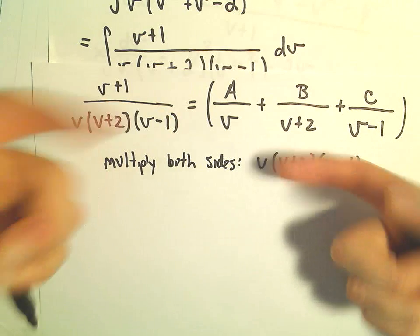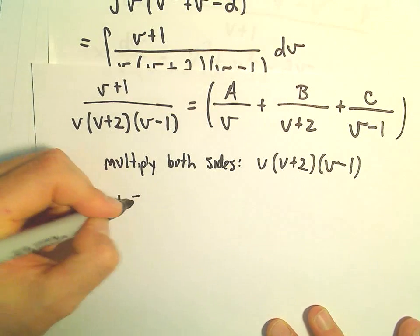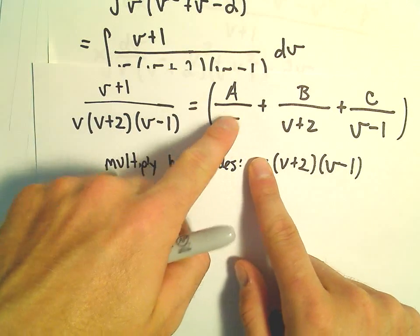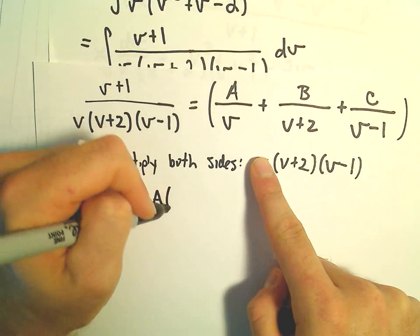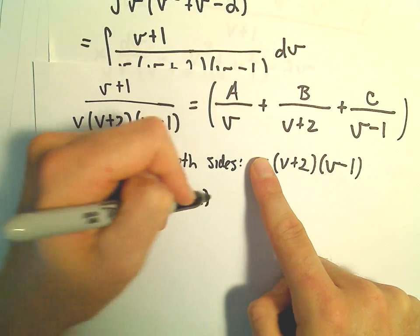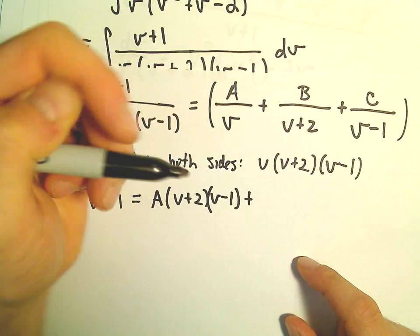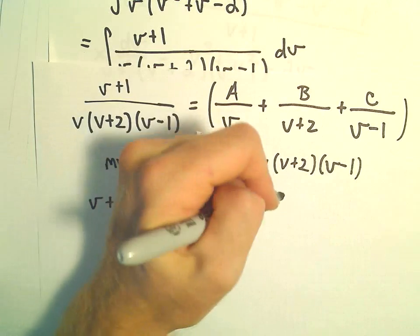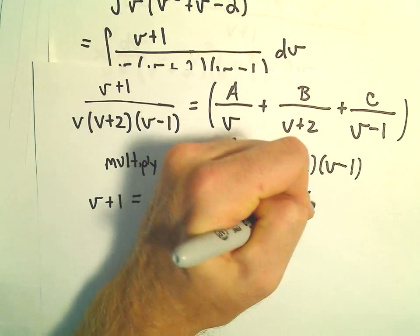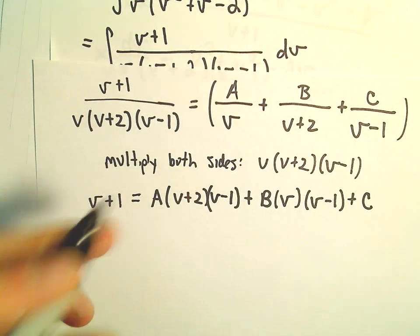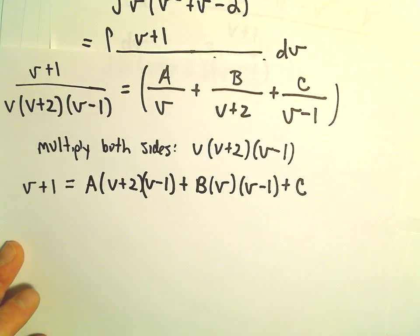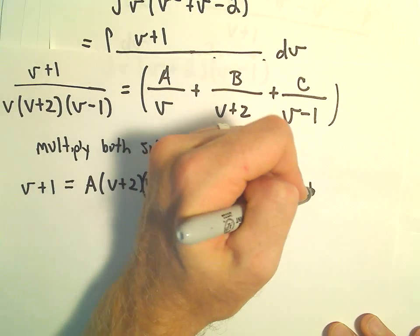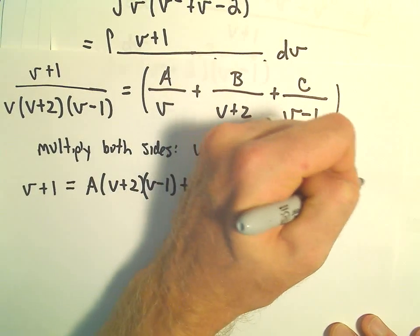On the right side: the v's cancel on the first term, leaving A(v + 2)(v - 1). The (v + 2)'s cancel on the second term, leaving B·v(v - 1). And the (v - 1)'s cancel on the last term, leaving C·v(v + 2).